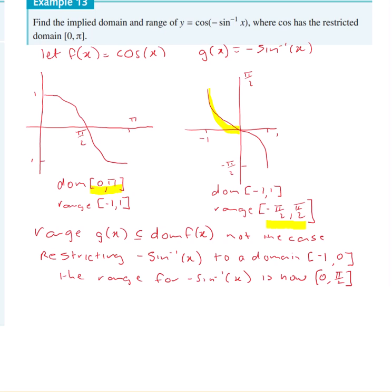So we've now got the domain, so therefore, the domain of f of g of x, which is cos of negative sine to the minus 1 of x, is equal to negative 1 to 0.